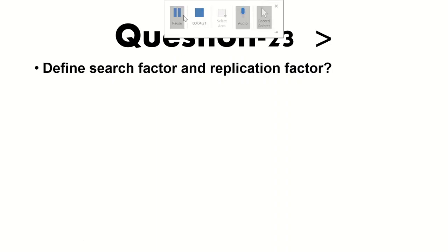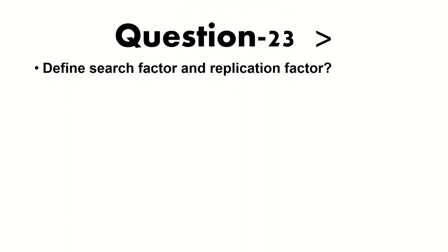What is search factor vs replication factor? The search factor determines the number of searchable copies of data maintained by the index cluster. The replication factor determines the total number of copies maintained by the cluster, including copies deployed across different sites. In summary: search factor relates to searchable copies, and replication factor relates to total copies across sites.